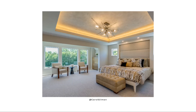Another type of accent lighting is more spread out but still draws attention to something in the room. An example is cove lighting, where light is placed inside a cove in the ceiling, providing a spread of light that lets us notice the beauty and details of a beautifully designed ceiling.